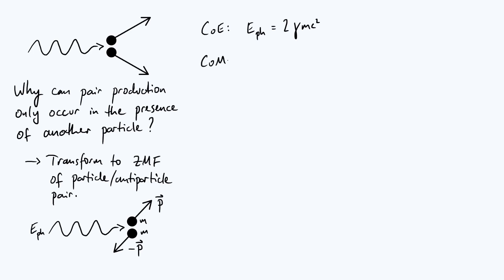So what about conservation of momentum? Well, the initial momentum is just the momentum of the photon. So let's say p_ph, momentum of the photon. The final momentum is in fact zero because we're working in the zero momentum frame of the particle-antiparticle pair. It's just p minus p.